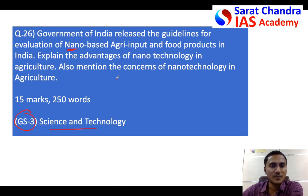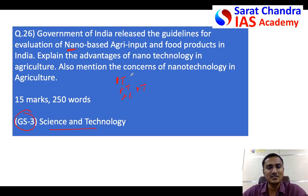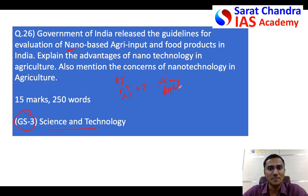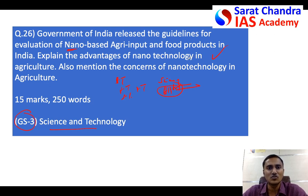Remember, when in General Studies Paper 3 you write answers on biotechnology, nanotechnology, space technology, or defense technology, do not try to be too technical. Don't use too much technical jargon. You have to apply science and technology to general things like agriculture or industries. Sometimes a history or geography student gets more marks than a science student because the science student gets carried away by scientific knowledge and writes more scientific terms rather than explaining what is asked.